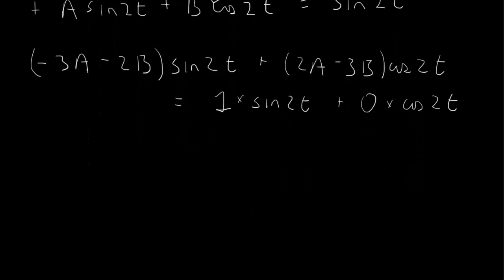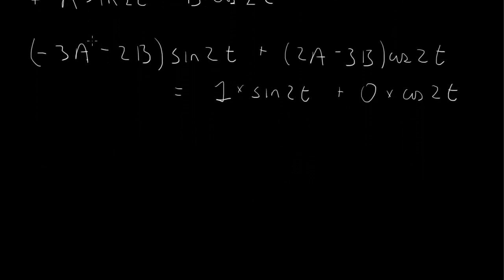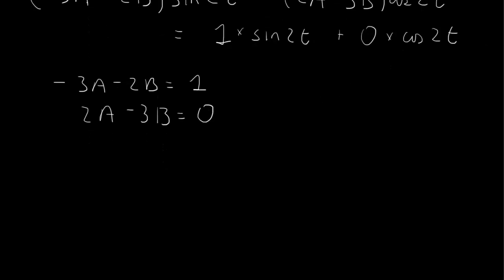So the coefficients of sine and cosine must match. So we get minus 3a minus 2b equal to 1, and we get 2a minus 3b equal to 0. A system of two equations, two linear equations and two unknowns.